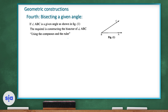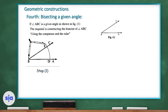For example, if angle ABC is given, the required is to construct the bisector of angle ABC. Bisector means to draw a line that divides angle ABC into two equal angles using the compass and ruler. First step: open the compass, put the pin on point B, and draw an arc that passes through BA and BC.